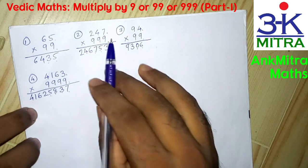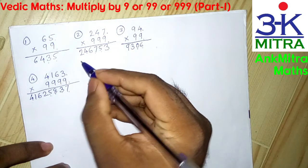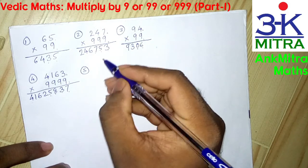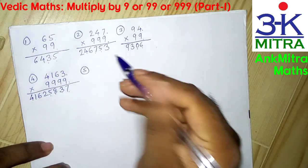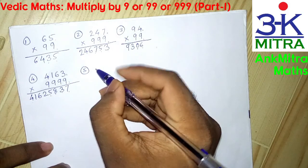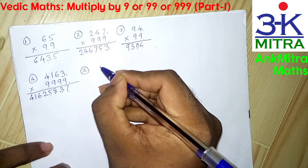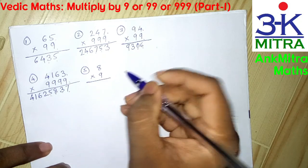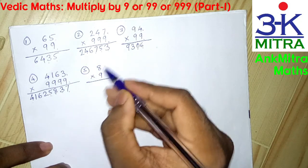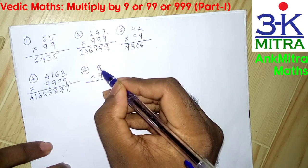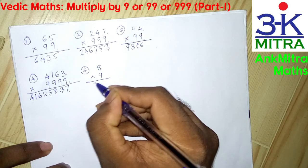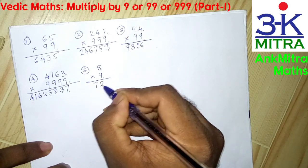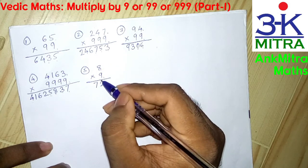This method works even for single-digit numbers. Let's say we multiply 8 by 9 — we know 8 times 9 is 72, but let's try this method. Reducing 1 from 8 gives 7, and subtracting 8 from 10 gives 2, so the answer is 72. That's exactly right.